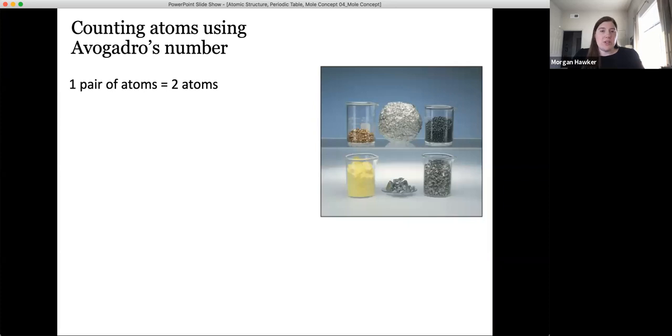To answer this question, we'll need to consider how atoms are counted. We could count them individually, but this is often impractical because we're usually dealing with large numbers of atoms in a specific type of sample. We could consider counting the atoms in pairs, so one pair of atoms equals two atoms, or dozens, so one dozen atoms would equal 12 atoms. While both of these statements are true, pairs and dozens aren't convenient when describing the number of atoms in a typical sample.